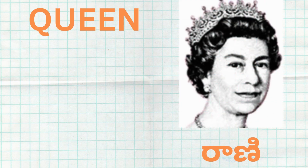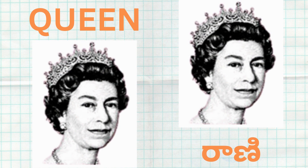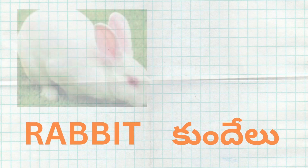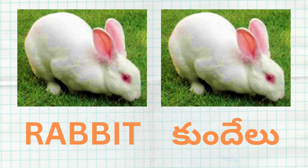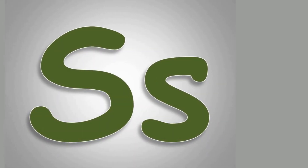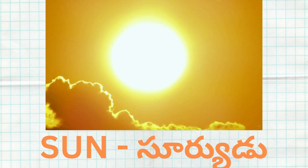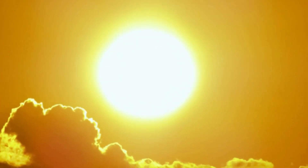Q for Queen. Queen Ante Rani. R for Rabbit. Rabbit Ante Kundelu.